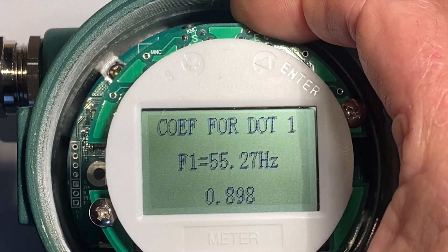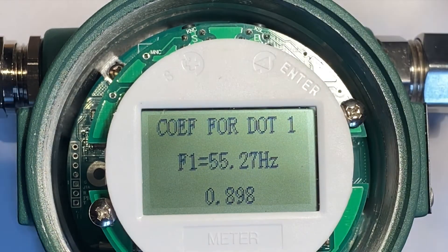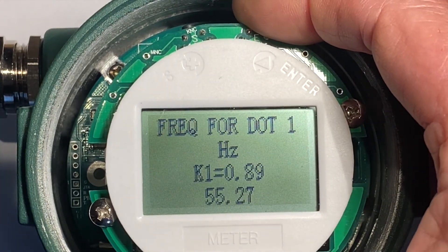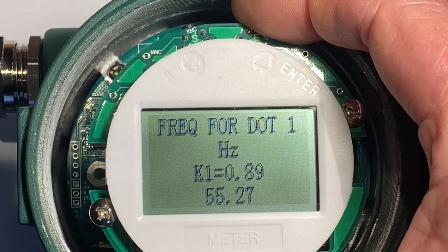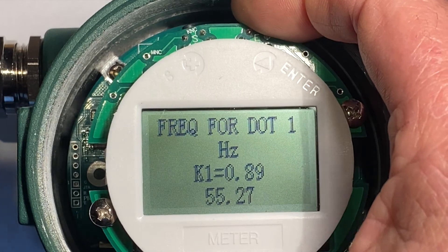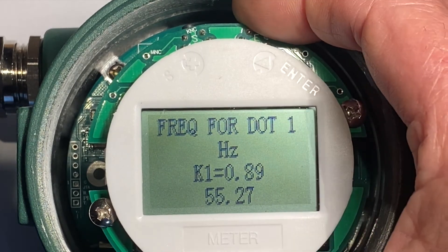We're going to adjust coefficient one. So coefficient one is 0.898, which is already set. And the frequency for coefficient one is 55.27 hertz. That'll be seen from the spreadsheet.